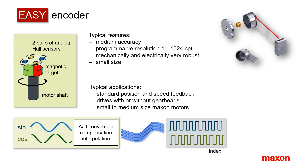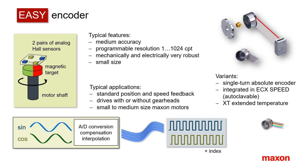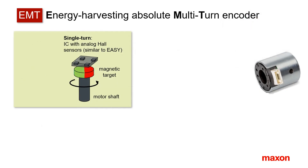The unique rotor position signal within one motor turn allows generating absolute encoder signals — that is the EZ absolute single-turn encoder. While the EZ absolute encoder can only give absolute position feedback within one turn, the EMT is also capable of keeping track of the number of turns.